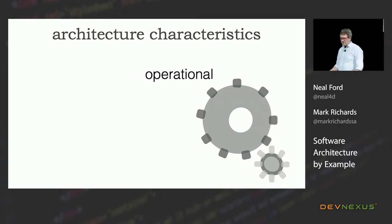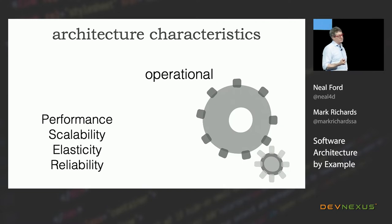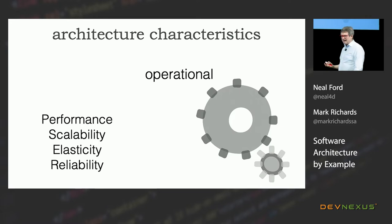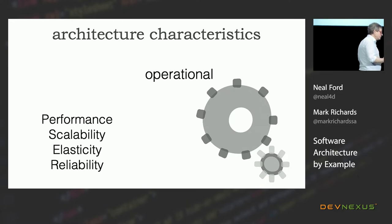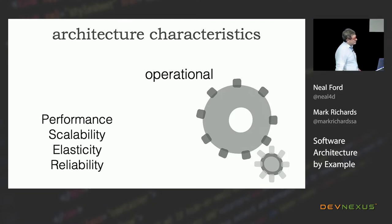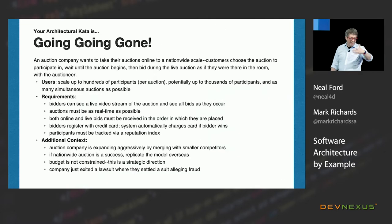Let's talk about a few architecture characteristics, especially the family of operational architecture characteristics: performance, scalability, elasticity, reliability, data integrity, etc. These are important because in modern architectures like microservices, this is where roles like operations, architecture, and DevOps meet — you have to design for scalability but also have operational support for scalability. These architecture characteristics are often not completely owned by architects; they influence other parts of the ecosystem as well. Security is a great example of a quality architecture characteristic.